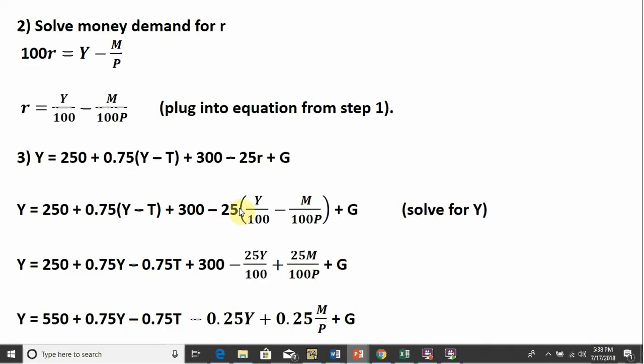Then we get minus 25Y divided by 100. And then a minus 25 multiplied by a minus M divided by 100P gives us a positive 25M over 100P. And the G is still here.